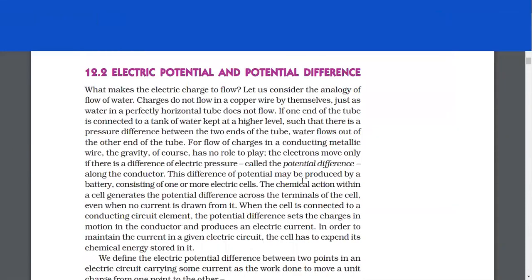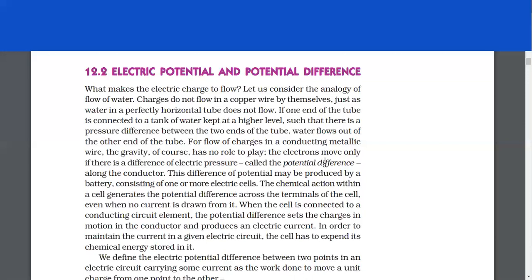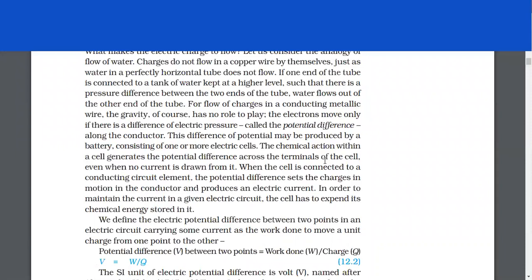Electric potential and potential difference. What makes the electric charge to flow? Let us consider the analogy of flow of water. Charges do not flow in a copper wire by themselves, just as water in a perfectly horizontal tube does not flow. If one end of the tube is connected to a tank of water kept at a higher level such that there is a pressure difference between the two ends of the tube, water flows out of the other end of the tube. For flow of charges in a conducting metallic wire, gravity of course has no role to play. The electrons move only if there is a difference of electric pressure called the potential difference along the conductor. This difference of potential may be produced by a battery consisting of one or more electric cells. The chemical action within a cell generates the potential difference across the terminals of the cell, even when no current is drawn from it.